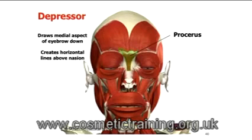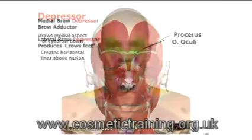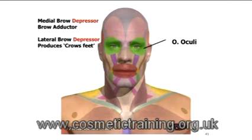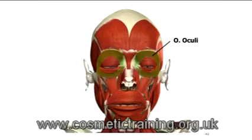When you scrunch your nose, you can see them. The orbicularis oculi — medial brow depressor and a lateral brow depressor — produces the crow's feet that we're all quite familiar with. And again, on a muscular subject.